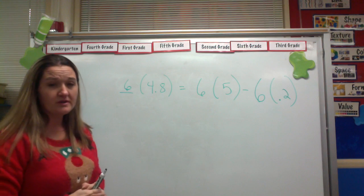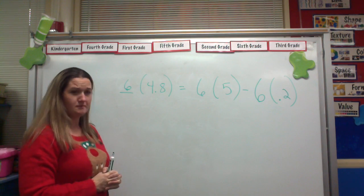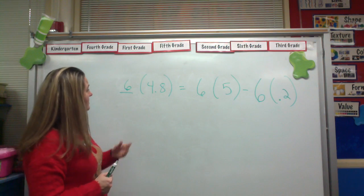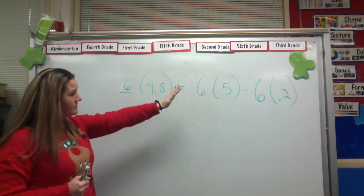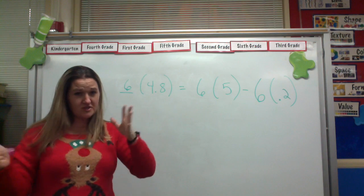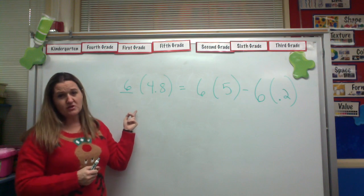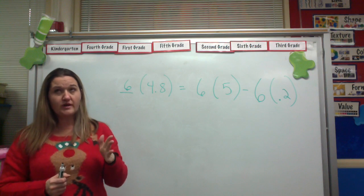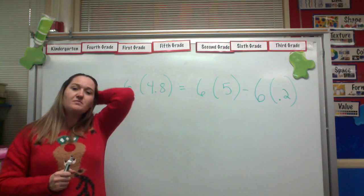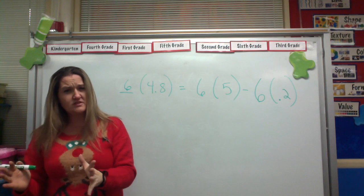The purpose of the distributive property is just, it's kind of a way to work out larger multiplication problems in your head. They're having you do these sort of activities to just kind of get you to understand how these numbers work together. But if I was in my head doing this, I'd be like, okay, 4.8, that's about 5. I know I can do 6 times 5 in my head pretty easily. That's 30. But it's not 5, it's 4.8, so my answer is not really 30, is it?